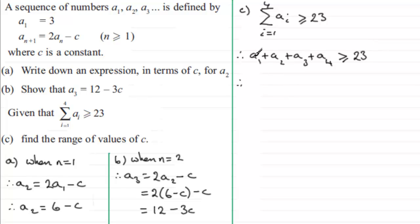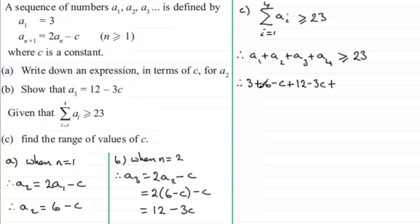We know a1 is 3, a2 is 6 minus c, and a3 is 12 minus 3c. For a4, we let n equal 3, giving a4 equals 2 times a3 minus c. So the sum becomes 3 plus (6 minus c) plus (12 minus 3c) plus 2 times a3 minus c, all greater than or equal to 23.